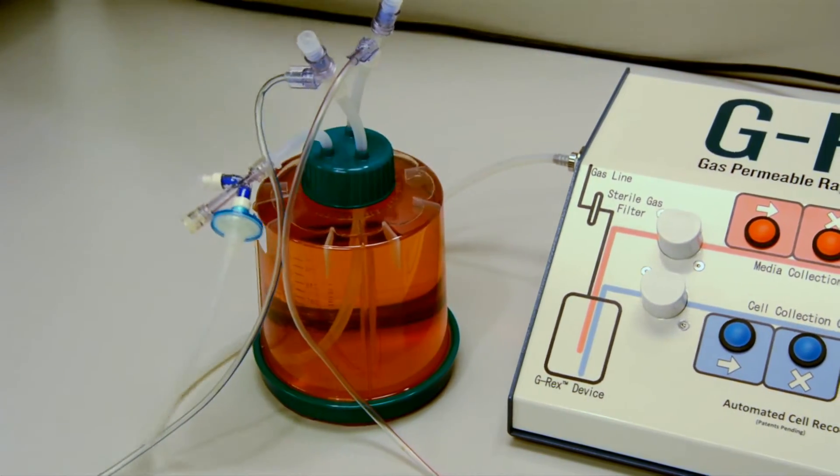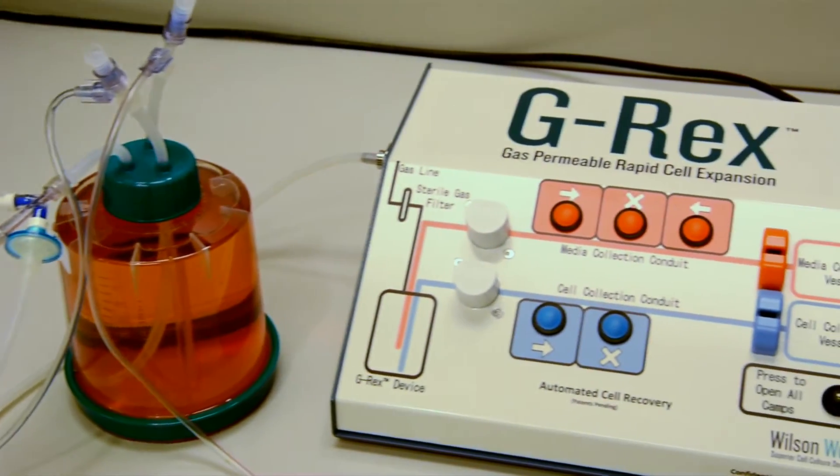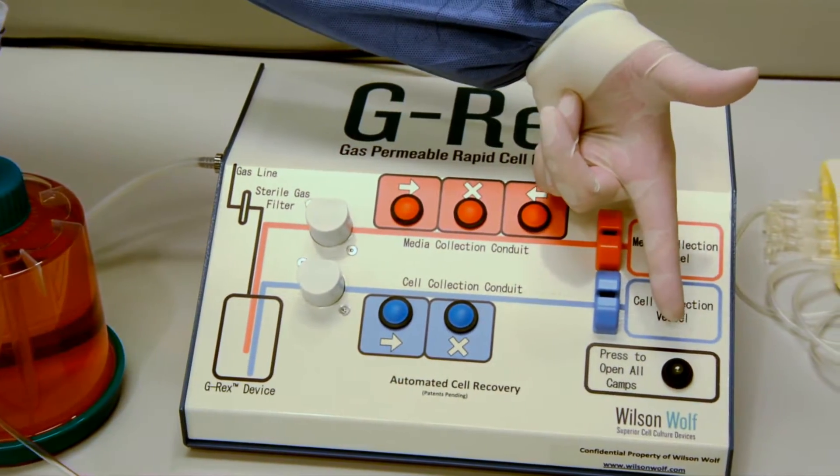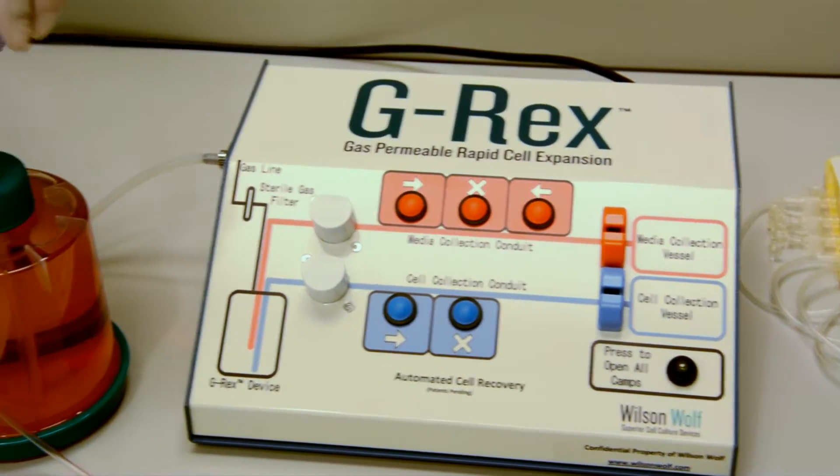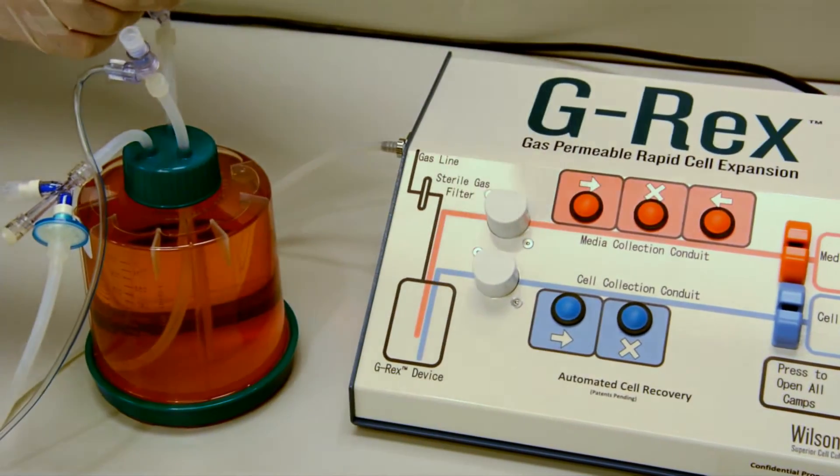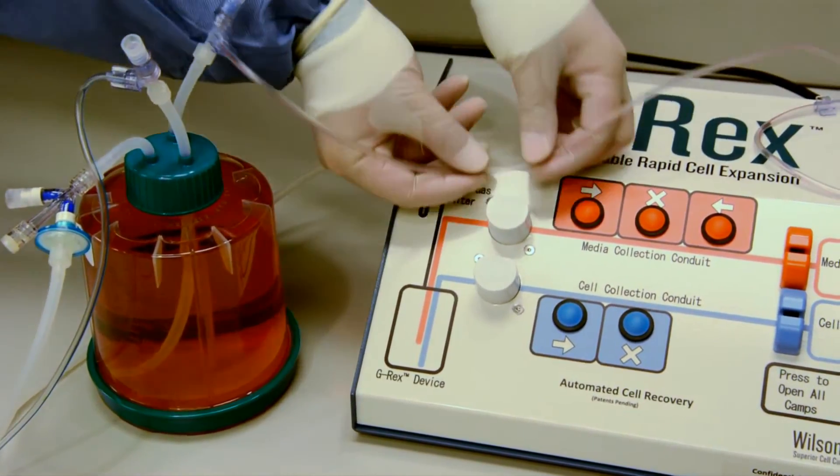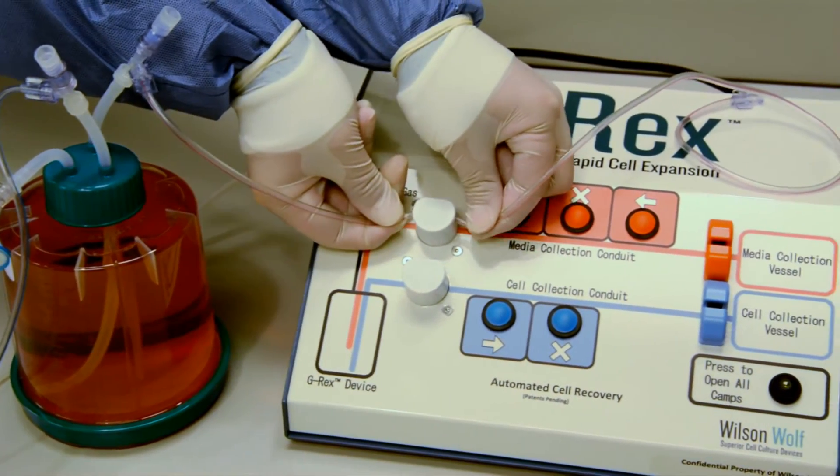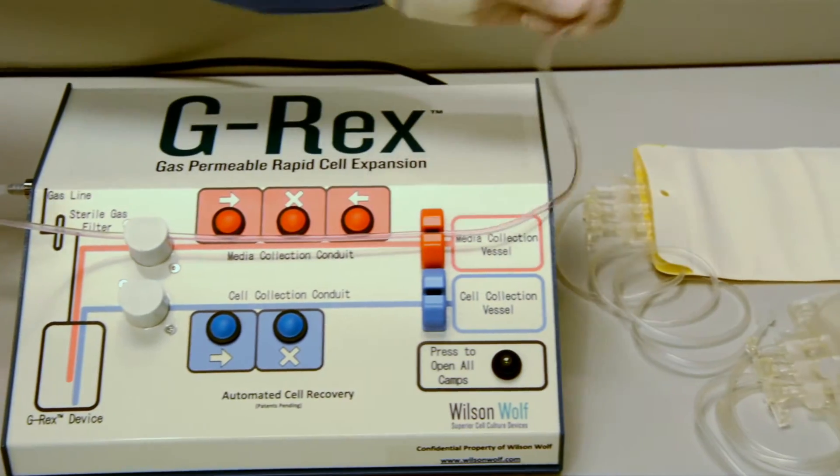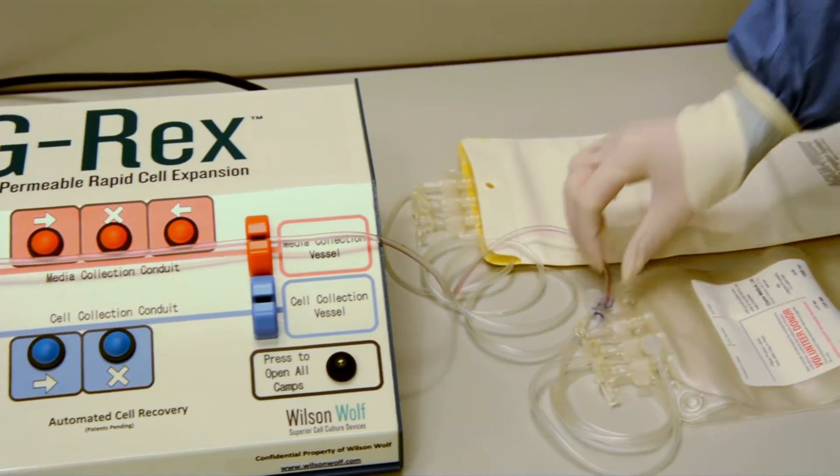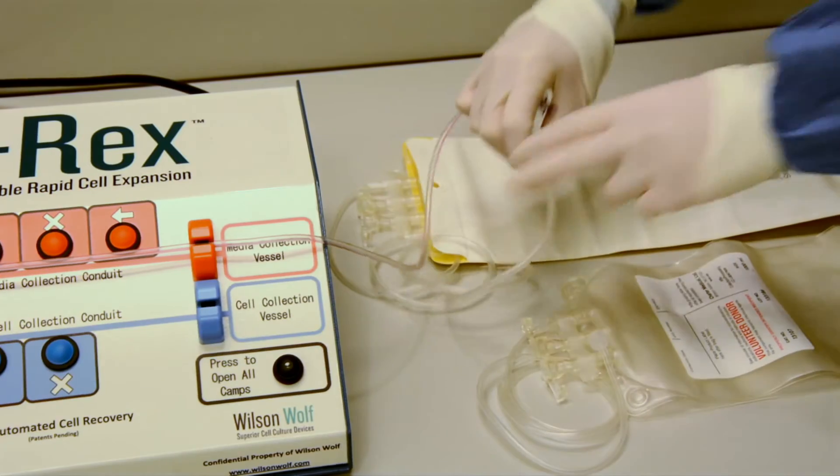In order to release both clamps and allow the lines to snap into place, we press this button and pass the orange media line through this clamp, which will automatically shut off once air bubbles are detected by this optical sensor after 90% of media is drained.